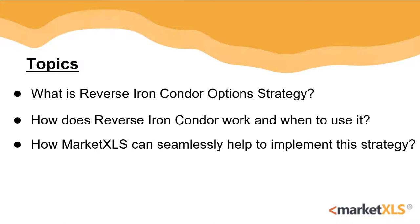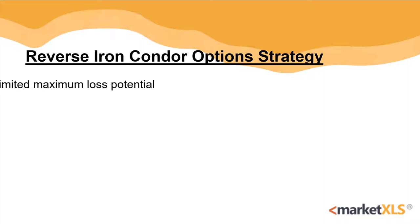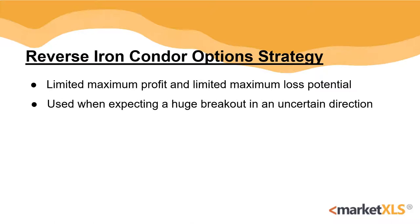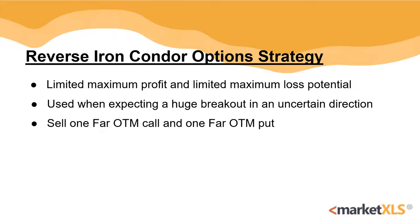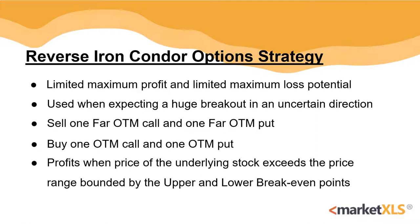So, without any further ado, let's start with the topic. A reverse iron condor is a strategy with limited maximum profit and limited maximum loss potential. It profits when the underlying stock breaks out to the upside or downside. To set up a reverse iron condor, the option trader buys a lower strike out-of-the-money put and sells an even lower strike out-of-the-money put. They buy a higher strike out-of-the-money call and sell another even higher strike out-of-the-money call. A net debit is taken to enter this trade. This strategy earns maximum profits at expiration if the underlying stock price expires above the upper breakeven point or below the lower breakeven point.